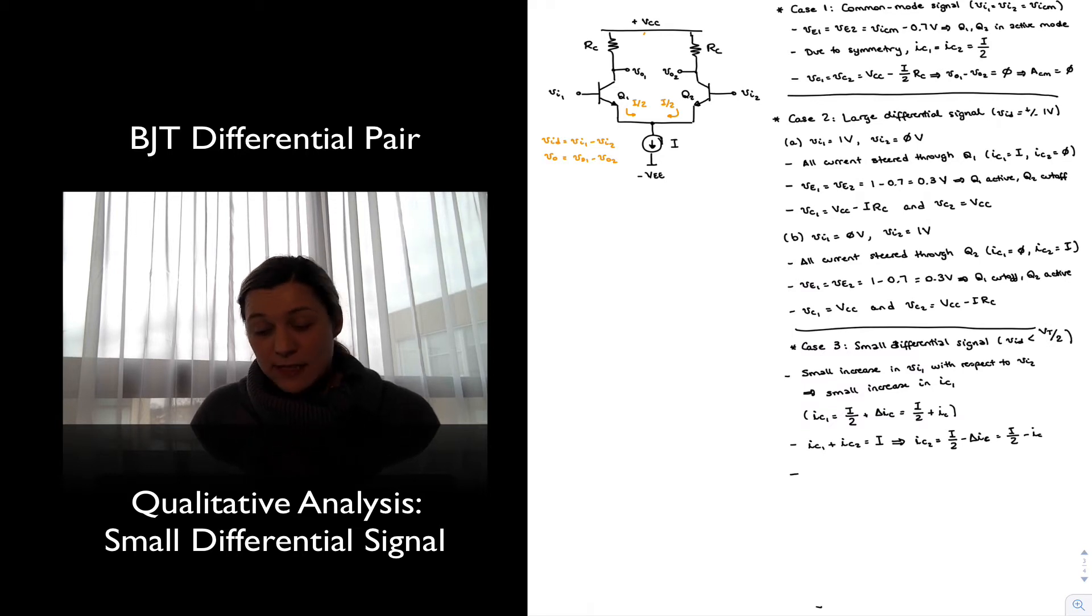And since that delta I_C is essentially a function of the input signal, the differential input signal that we have applied at the base, or between the bases of the transistors, that means we can use this circuit as an amplifier, because we can see that the output current and therefore the output voltage is going to be proportional to the differential input signal.